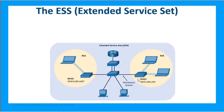BSS doesn't scale well for larger networks, so we flip over to ESS — the Extended Service Set. With ESS, you get one large area of coverage based on multiple Basic Service Areas deployed and all connected to one single wired distribution system. Multiple access points each have their own BSS ID, and this setup promotes roaming, so a user can walk from one office to another seamlessly without manually reconnecting to a different SSID.